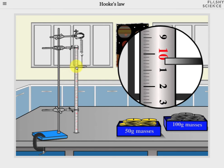To measure the position of the empty mass holder simply click on the ruler to open a zoomed view and you'll see the scale of the ruler in centimeters.